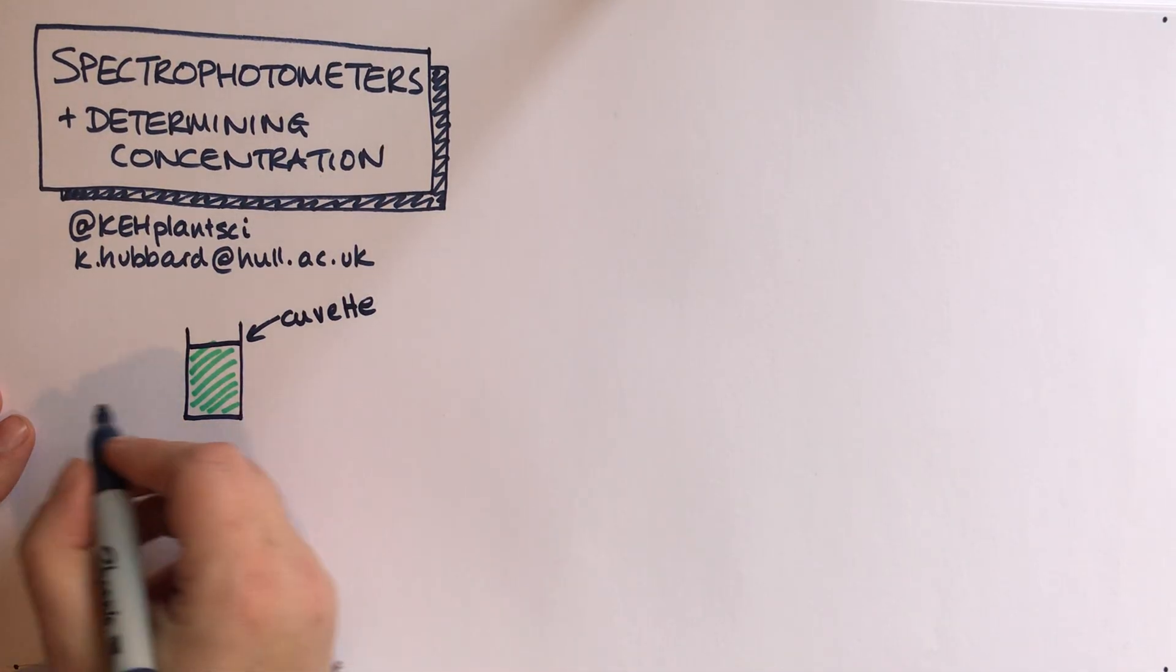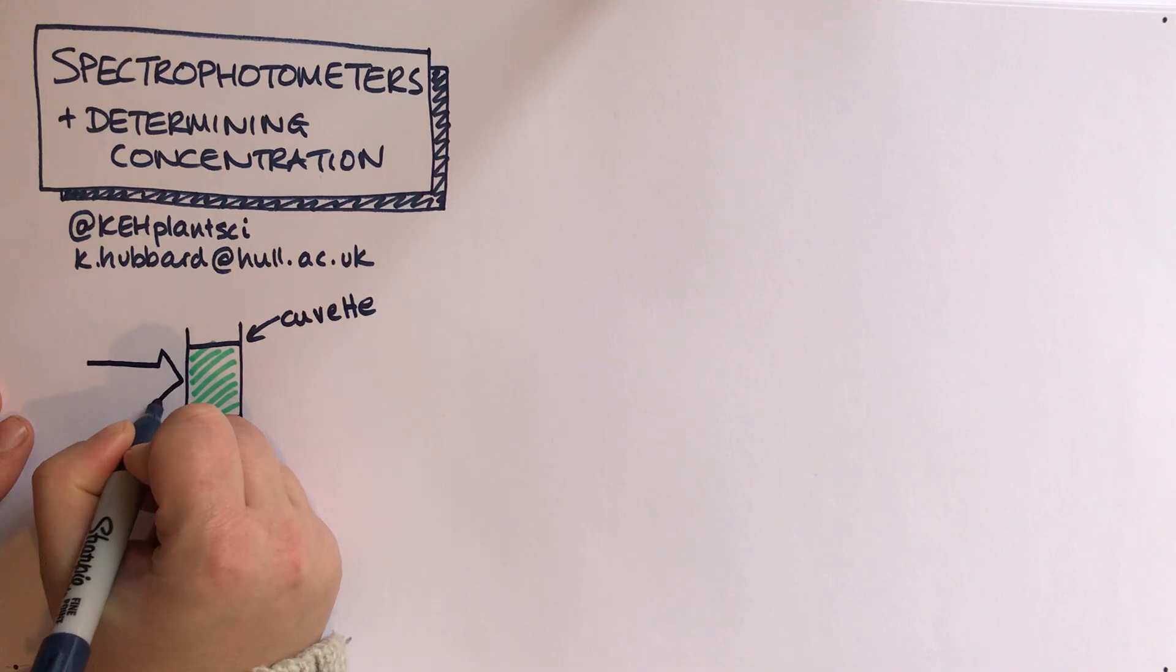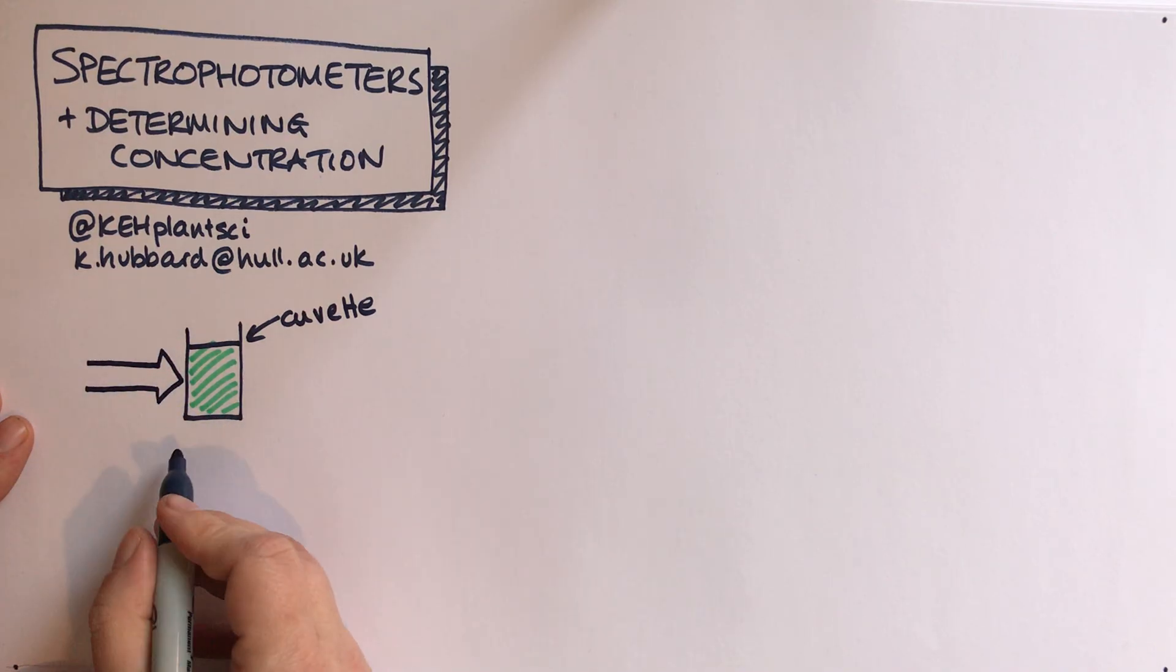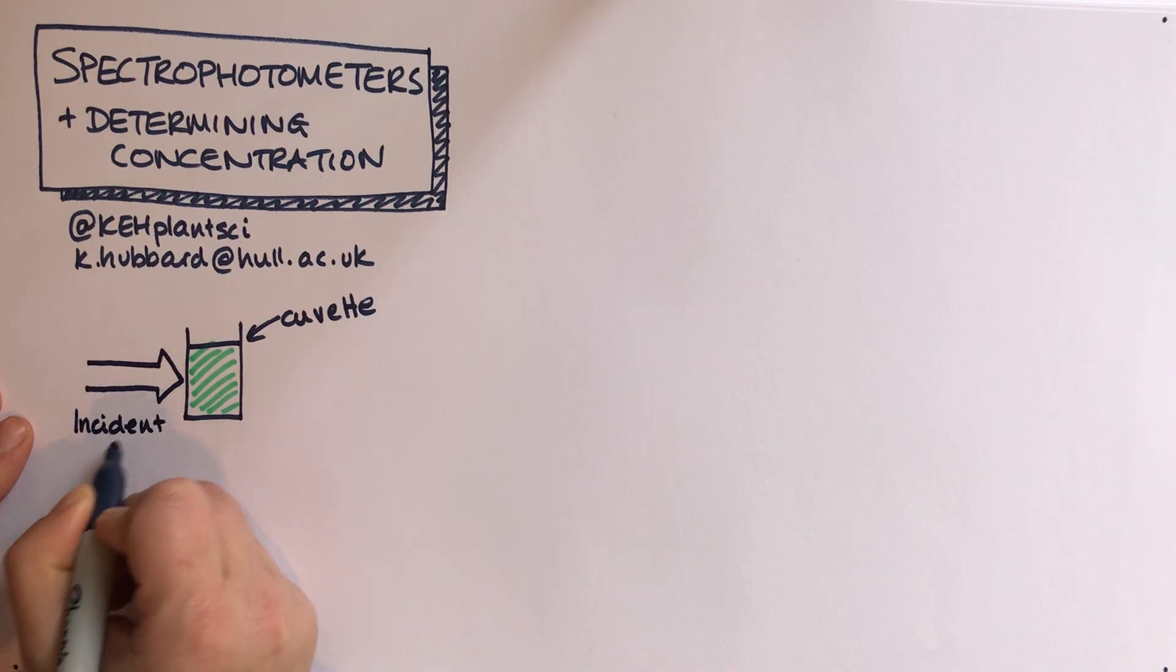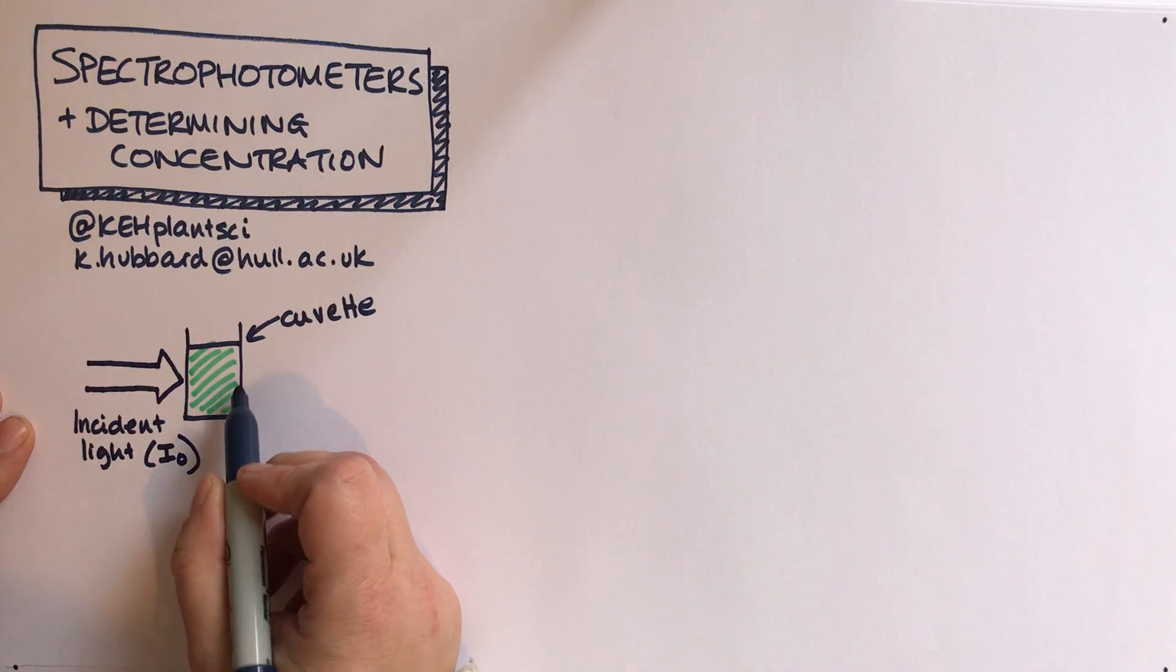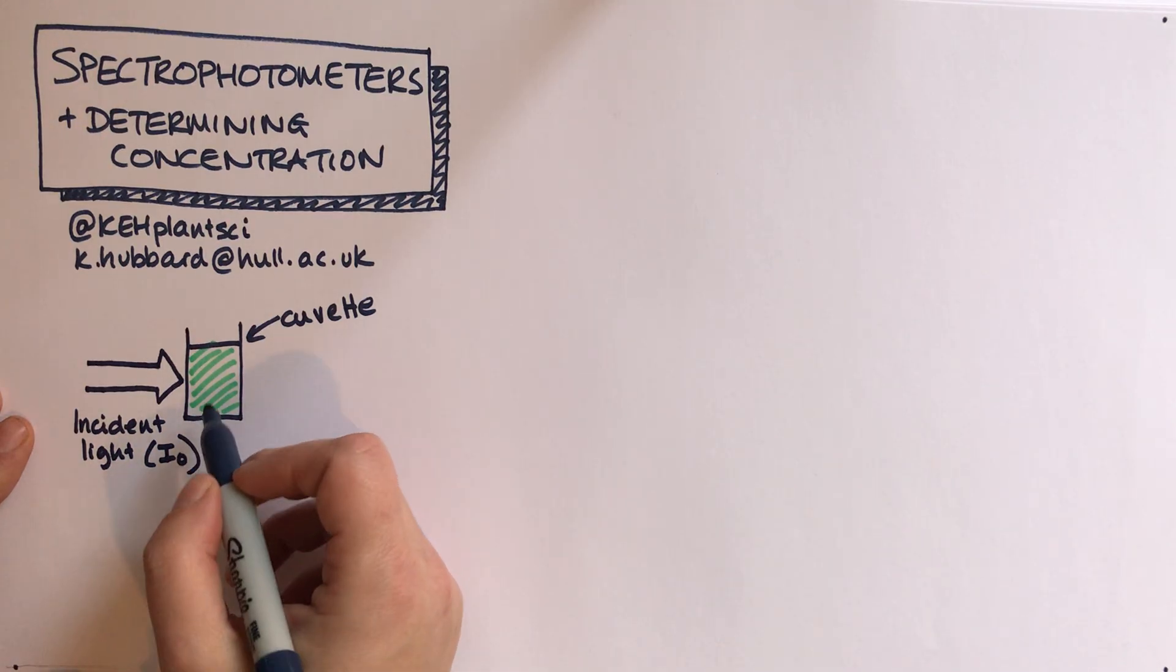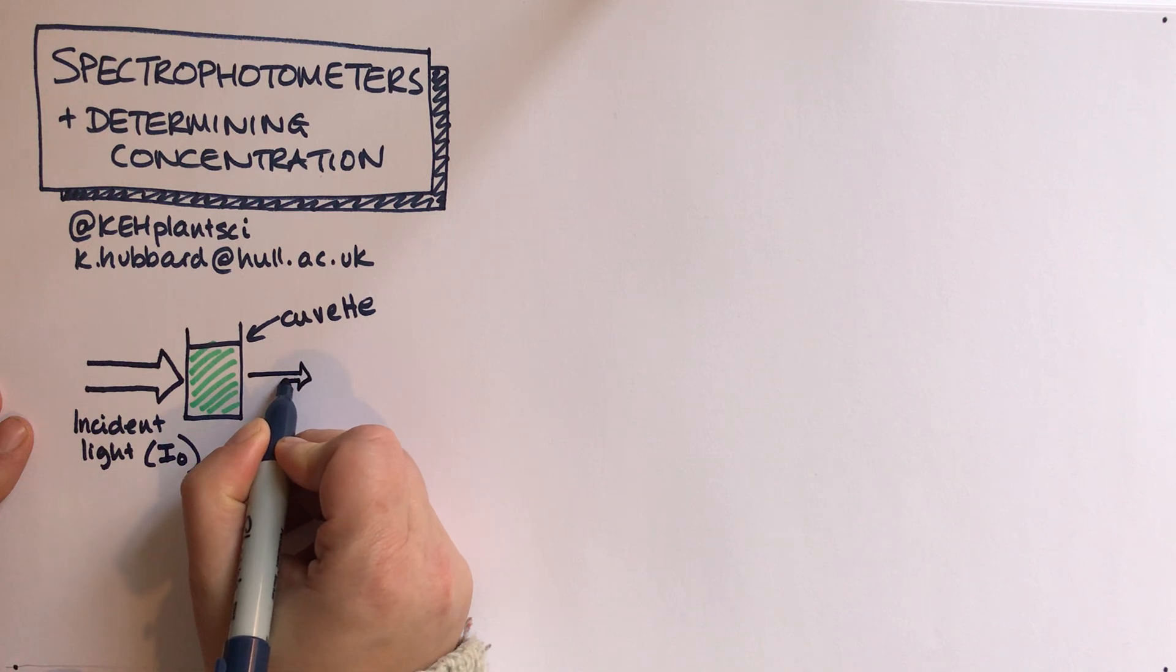What you do is you shine a light through the sample, so you shine a beam of light which is called the incident light, which we refer to as I0. You shine that through the sample.